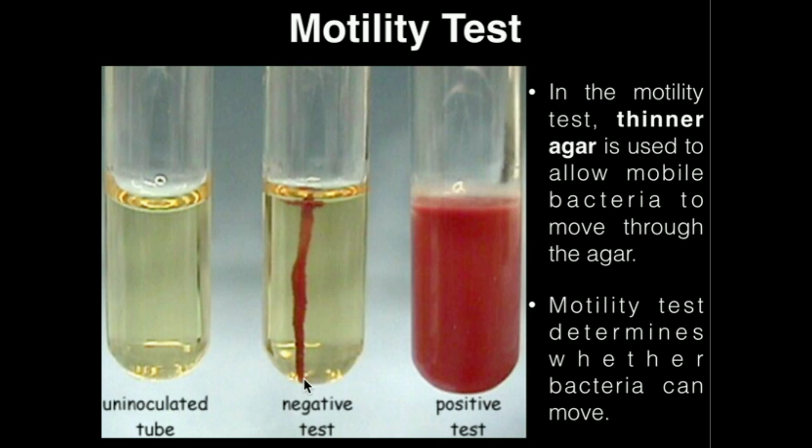You'll notice that in both the negative test and positive test we have a red color. The red color comes from a molecule called TTC, also known as tetrazolium salt. TTC is a chemical that initially is colorless. However, bacteria can use TTC as an electron acceptor, and through bacterial metabolism, whenever they transfer an electron to TTC, it becomes reduced and changes color to red. Therefore, a red color anywhere in the tube is indicative of the presence of bacteria.